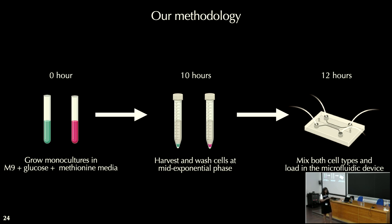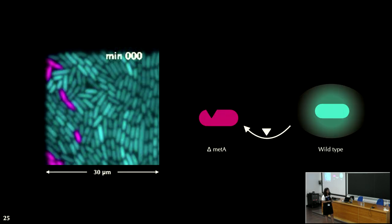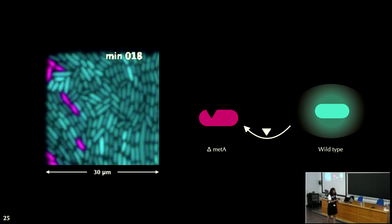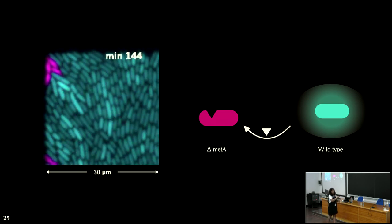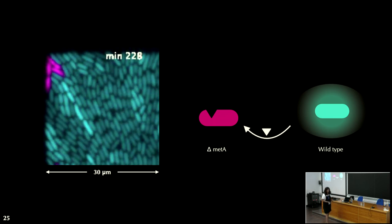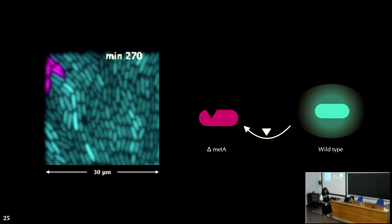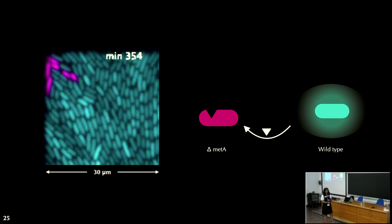As a control, after harvesting, we also grow monocultures of the wild type and the auxotroph. The auxotroph basically cannot grow, whereas the wild type cells do grow in M9 supplemented with carbon. This is an example video from one of my experiments — the pink cell is the auxotroph, the green cell is the wild type, and this is just half a chamber, not the full chamber.